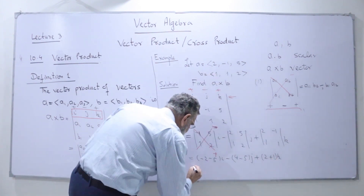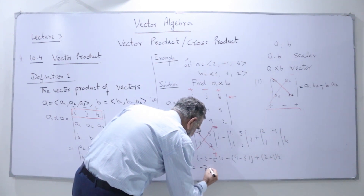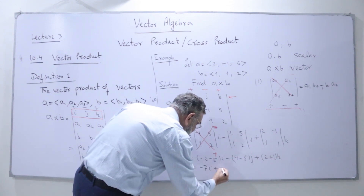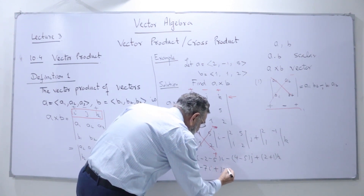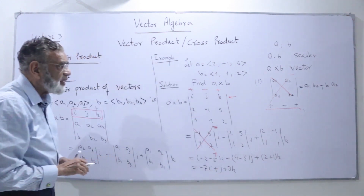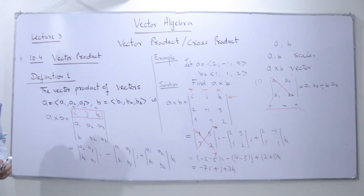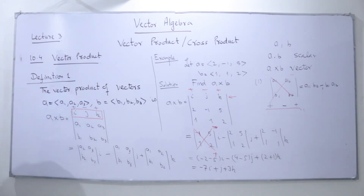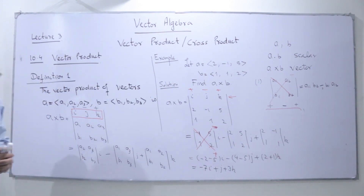We simplify this. We are having here -7i, then minus into minus becomes plus, so plus j. That is my cross product of vectors a and b. We get 7i... and we are having -1j, so 7i minus j — this is minus minus becomes plus — and plus 3k. So that is my result.